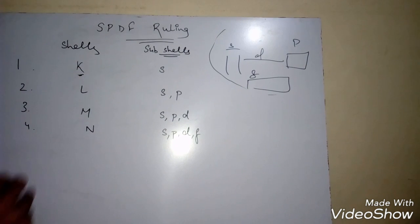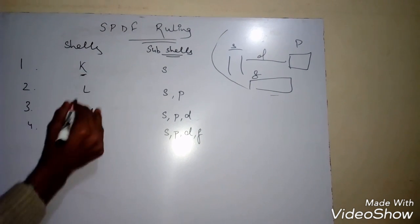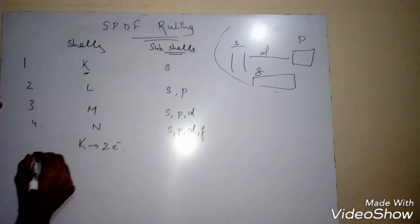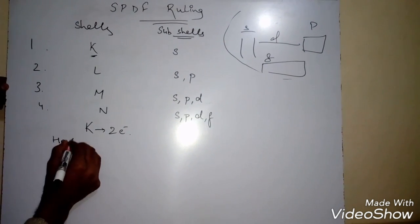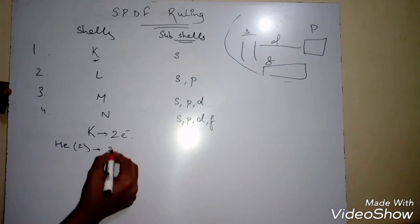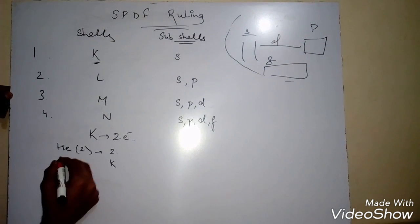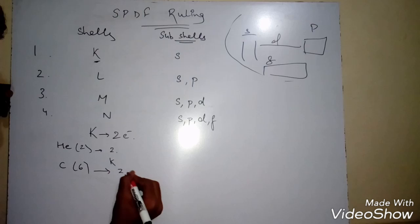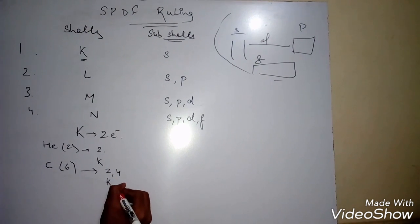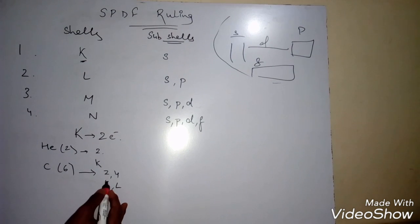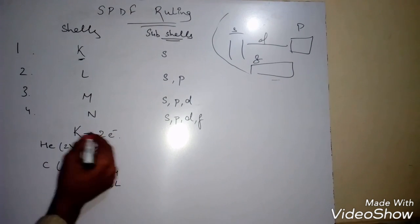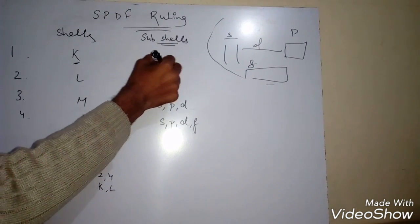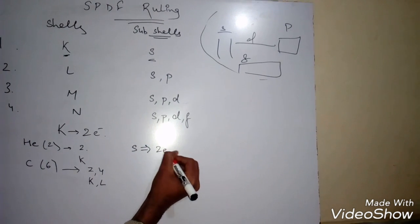According to Bohr's theory, the K shell holds two electrons. For example, helium with atomic number 2 has an electronic configuration of simply 2, which is the K shell. Since K holds two electrons, we can say that the S subshell also holds two electrons.